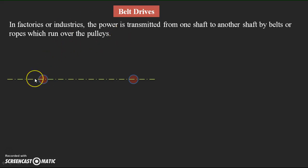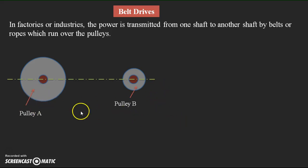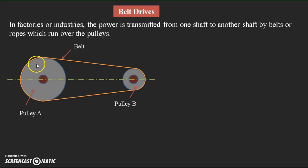Power transmission here means transmission in the form of rotation. If we want to transmit rotary power from the first shaft to the second shaft, we make use of belts and pulleys — that is, the belt drive system. On the first shaft one pulley is connected, and similarly on the second shaft another pulley is connected. Over these two pulleys — pulley A and pulley B — one belt is connected. When pulley A starts rotating, it carries the belt, and the belt carries pulley B, transferring rotary motion from one shaft to another.